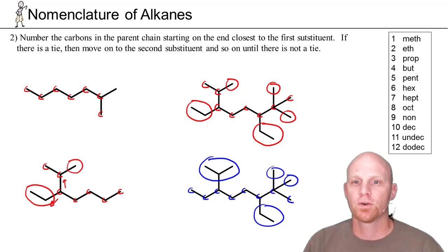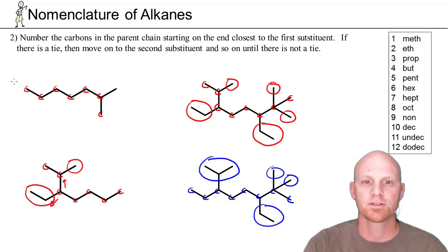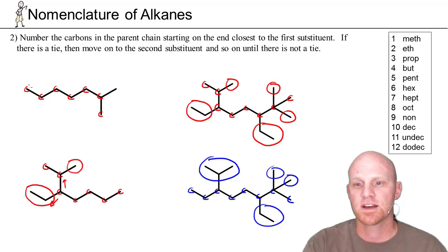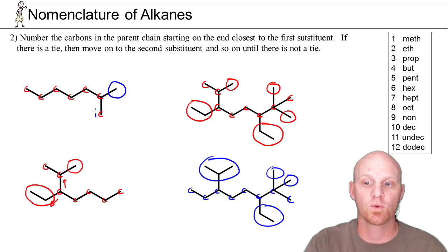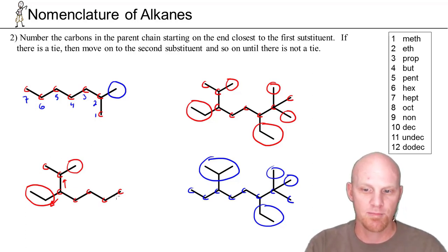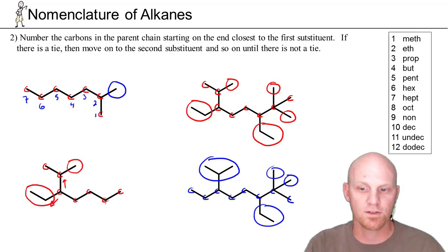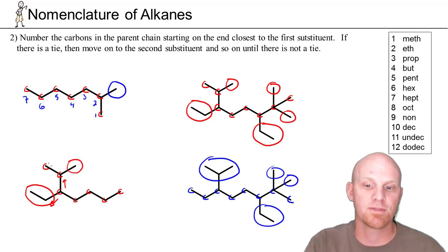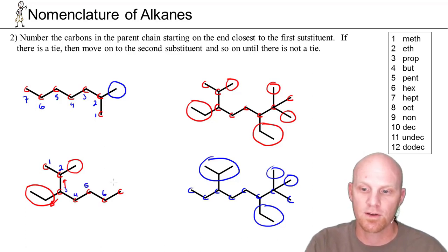Rule number two deals with numbering the parent chain. You want to start on the end closest to the first substituent — your goal is to give that first substituent the lowest possible number. In the first example, numbering left to right puts the substituent at carbon six, but numbering right to left puts it at carbon two, which is superior. In the second example, starting from the opposite end gives the first substituent at carbon two rather than carbon five.